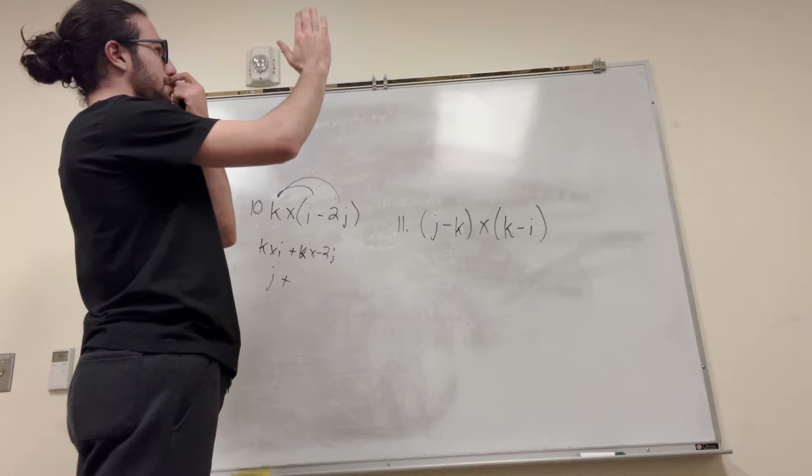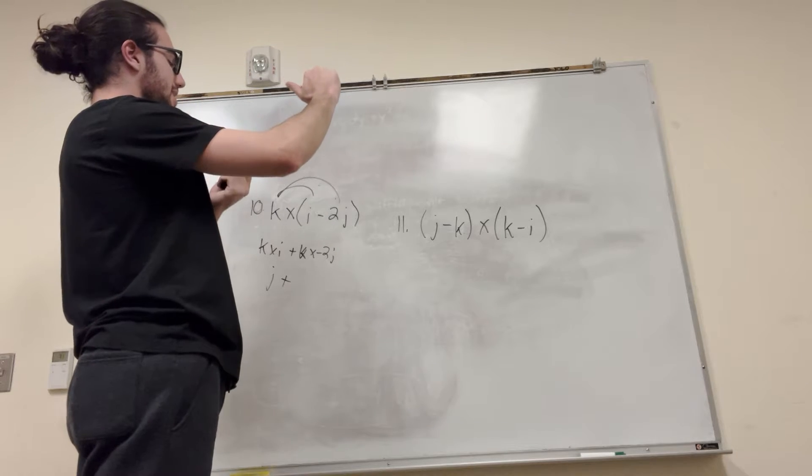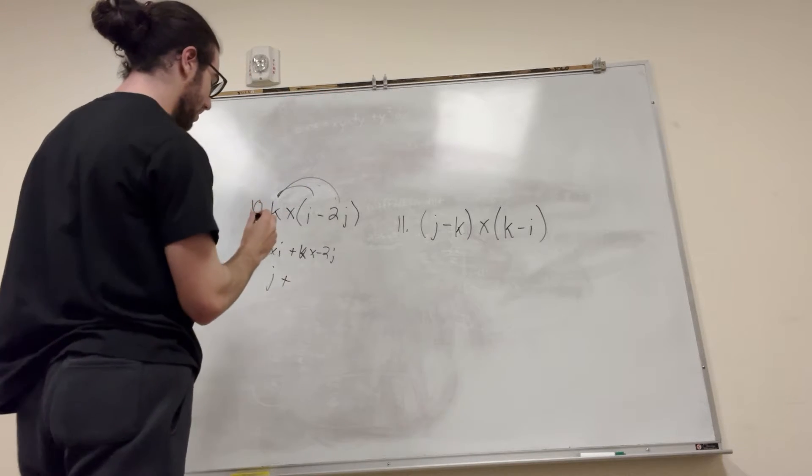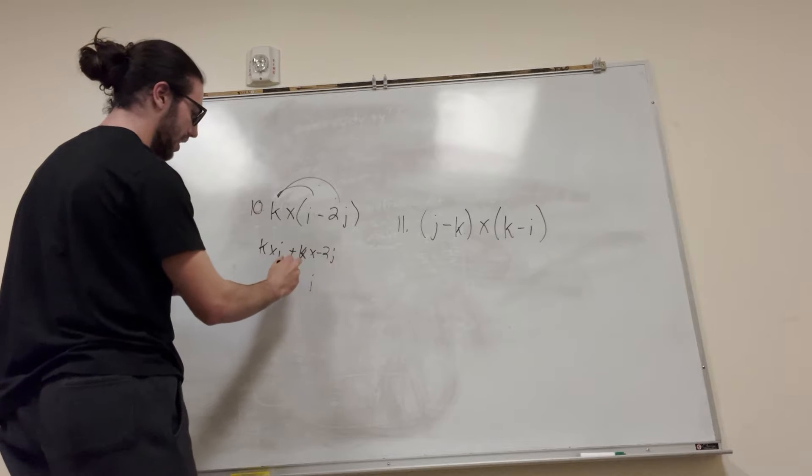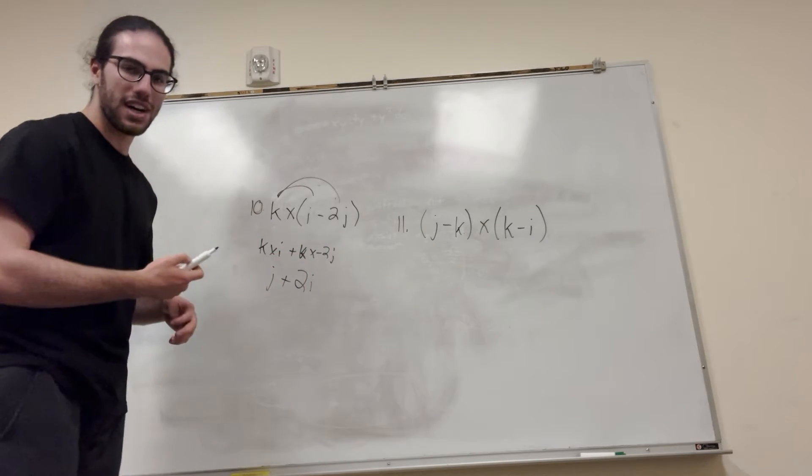So we think, pointing in the negative j. So this is just going to be i, right? So this is going to be i. But we still have our thing in front of it, so it's 2i. And that's our answer. Pretty simple, right?